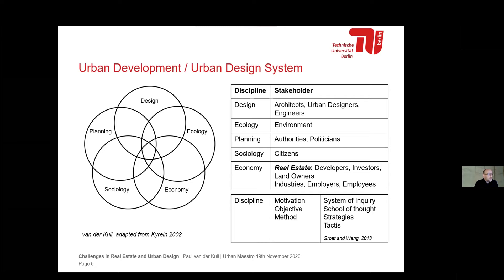Within the Department of Urban Development, we understand the urban development or urban design system as a set of five circles of objectives — 'Tierkreise' in German. Each circle represents a discipline with stakeholders involved, and we see these five disciplines as key for any urban development project. They are: design, containing stakeholders like architects, urban designers, and engineers; ecology, representing the environment; planning, with authorities and politicians; technology, with citizens and everybody that benefits from the built environment non-economically; and last but not least, economy, with the real estate sector behind it.